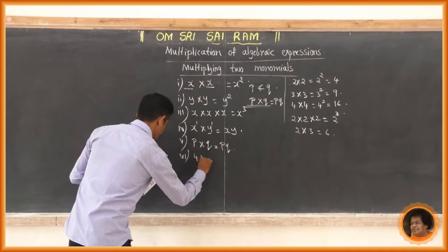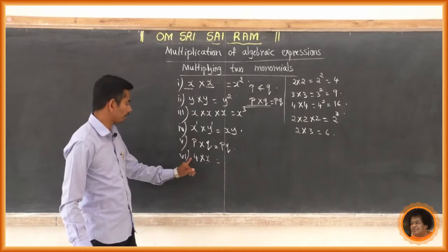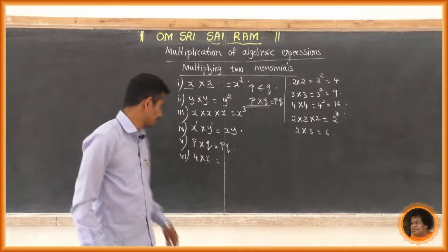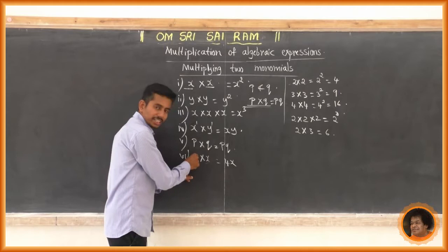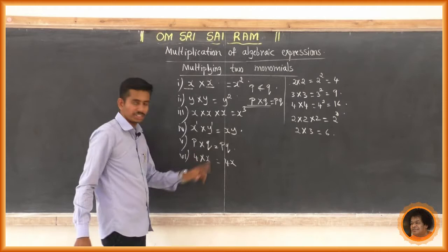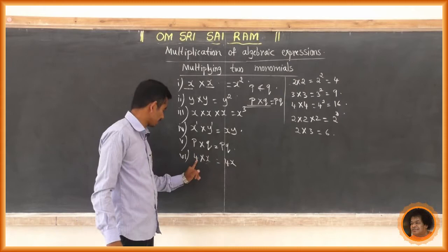What is the product of 4 into x? 4 is a numerical coefficient and x is a variable, so 4 into x is 4x.